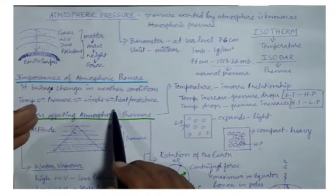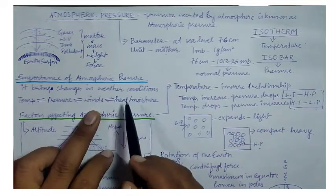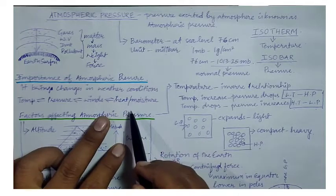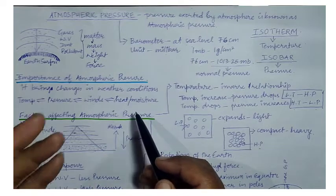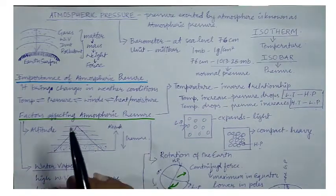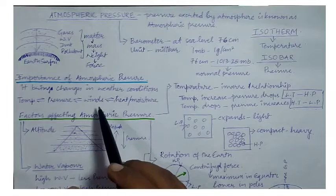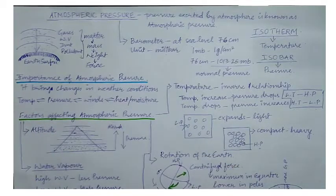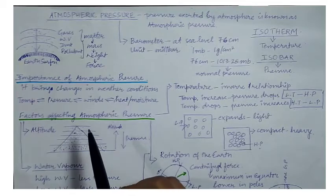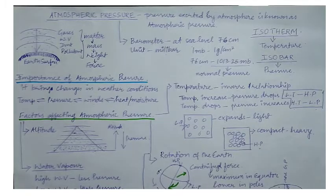When pressure is changing, winds are affected, which in turn impacts the heat or coldness of a particular place as well as moisture content. Advection is the force of winds which brings hotness and coldness from one place to another, and moisture-laden air is also transferred by winds. So all elements of weather and climate are interrelated, and changing atmospheric pressure impacts winds, heat, and moisture.